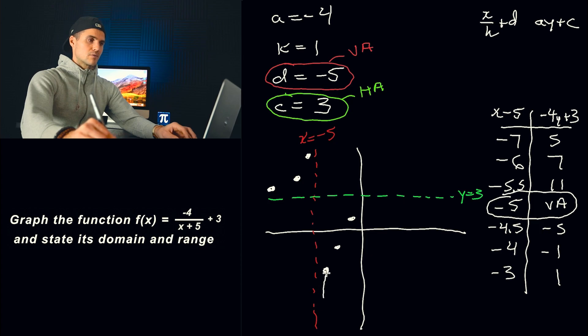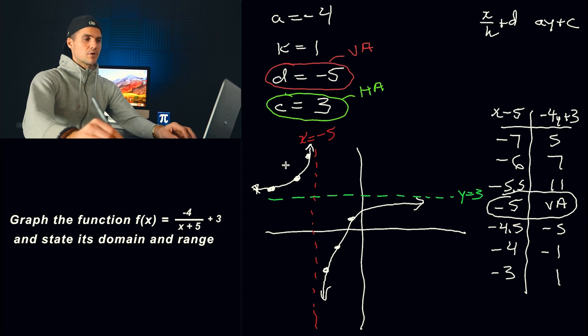And so we can just join these points. Again, not the most perfect graph, but it's going to look something like that. It should always give you a shape around these asymptotes that you drew. All right. So now that we have that, let's actually grab our domain and range.